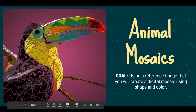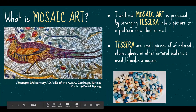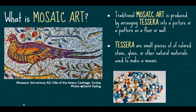We're going to create a mosaic. A mosaic is typically a type of art that arranges tesserae into a pattern on a floor or a wall. Tesserae are just small pieces of colored stone, glass, or other materials. This is typically what it looks like when you think of a mosaic.